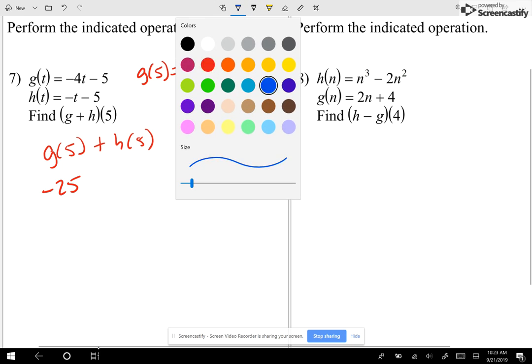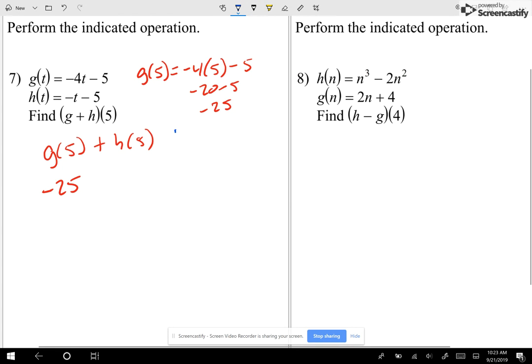Now let me find out what's h of 5. I have negative 5 minus 5. We can call that negative 10. So I'm doing negative 25 plus a negative 10. I'm doing g of 5 plus h of 5, which I'm going to call negative 35.